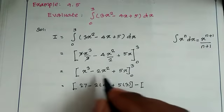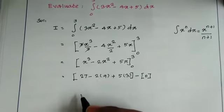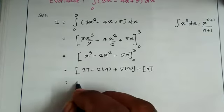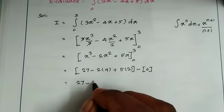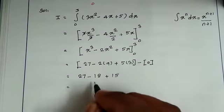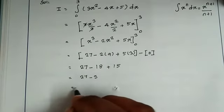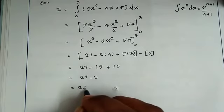Lower limit: 0 cube is 0, 0 square is 0, 5 into 0 is 0. Lower limit substitution gives 0. So 27 minus 2 times 9 is 18, plus 5 times 3 is 15. Therefore, 27 minus 18 plus 15 equals 24.